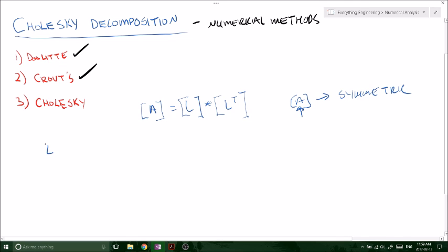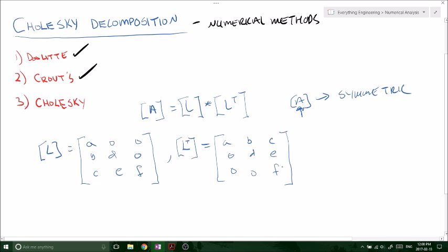If you guys remember what the lower triangular matrix looks like, this is lower triangular matrix. If we're dealing with a symmetric and square matrix, the transpose of our lower triangular matrix is nothing but the upper triangular matrix. So that's it.